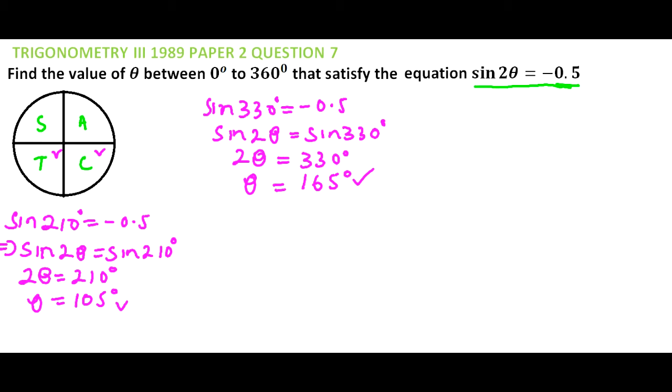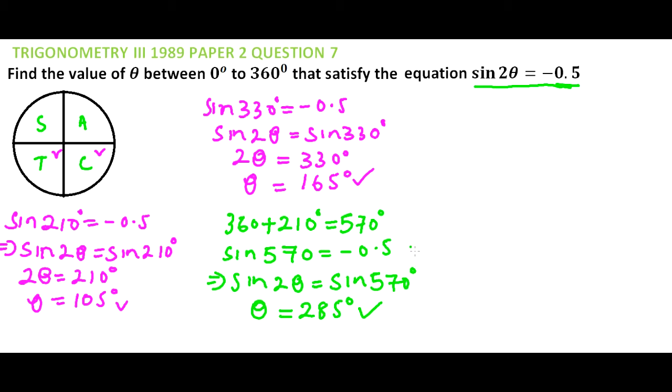That's another angle that satisfies our equation. To get the next angle, we add 360 to 210 degrees. This gives us 570 degrees. The sine of 570 equals -0.5, implying sin 2θ = sin 570°, so θ = 285 degrees. Our angle is still within the range of 0 to 360.